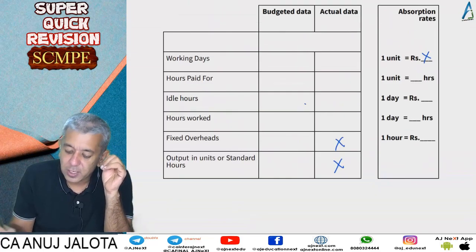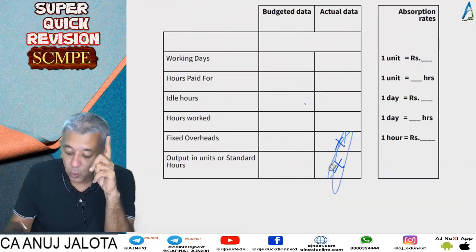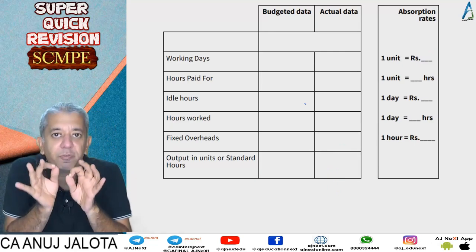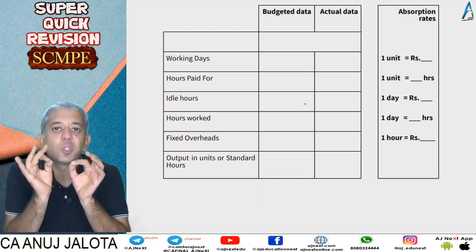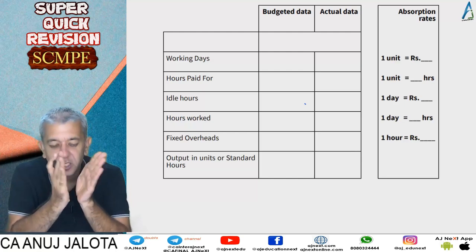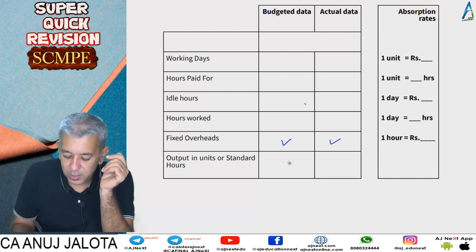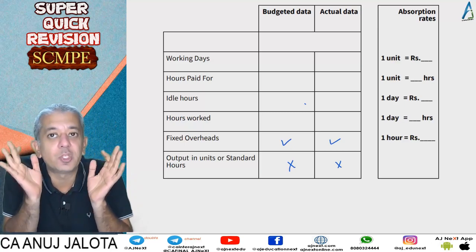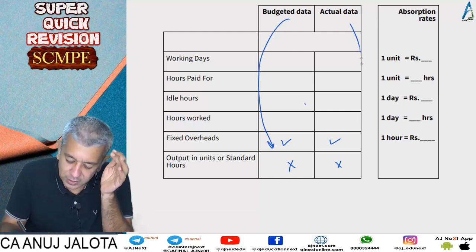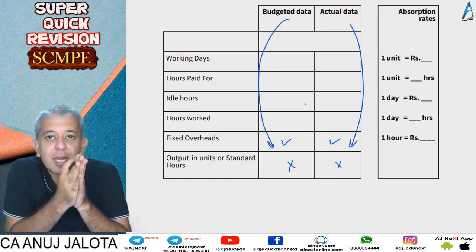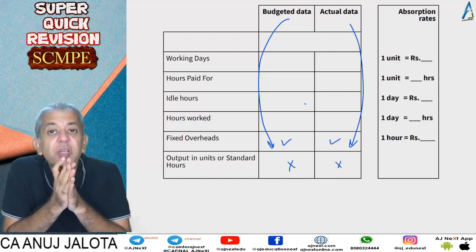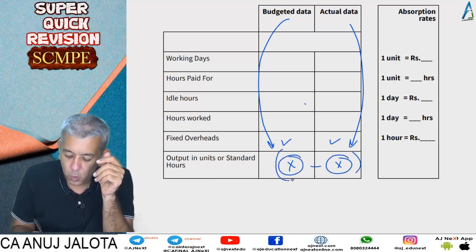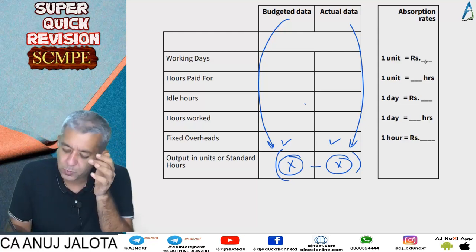The logic of under or over absorption: budgeted fixed overheads per unit is not equal to actual fixed overheads per unit. The difference arises either from a difference in overheads (expenditure variance — how much should have been incurred vs. how much was incurred) or a difference in output (volume variance — how many units should have been produced vs. actually produced, quantified by multiplying by absorption rate).